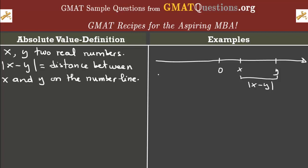I have chosen x and y to be on the right of 0, which means they are positive numbers, but they don't have to be. They could be both negative, or one negative and one positive. It doesn't matter where x and y are on the number line — the distance between the two of them is the absolute value of x minus y. Because of this definition, we can also say that the absolute value of x minus y equals the absolute value of y minus x, since the distance between x and y is obviously the distance between y and x.